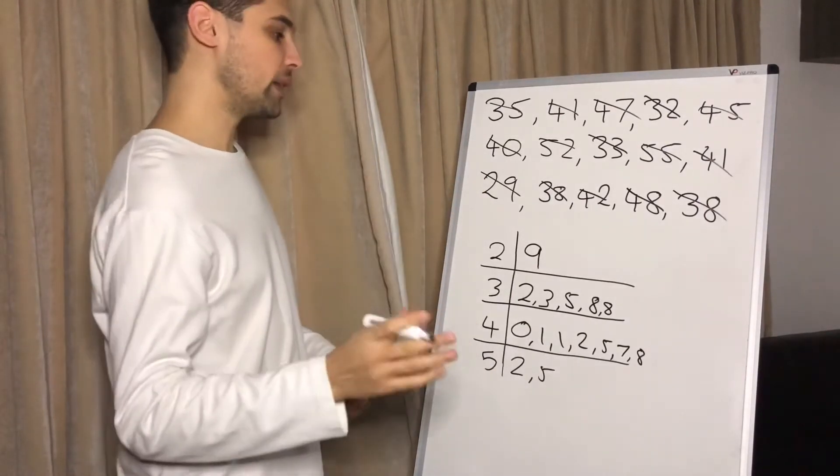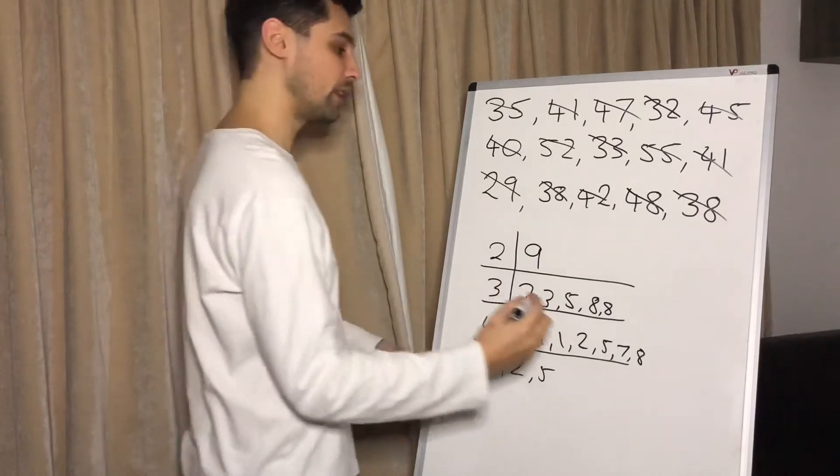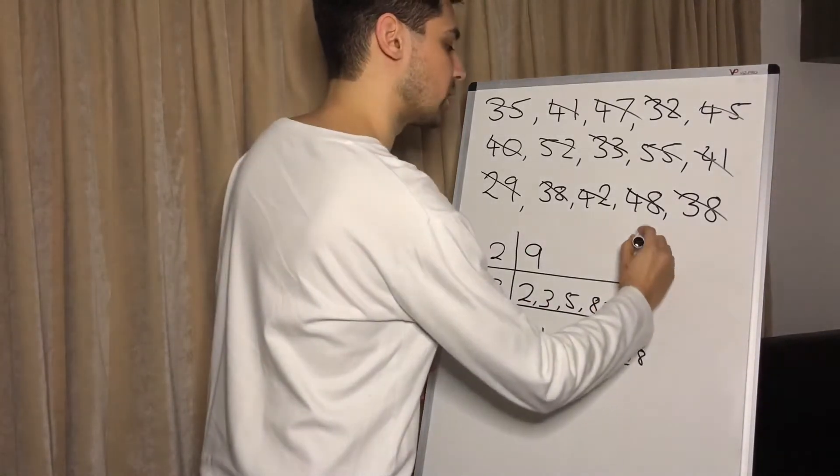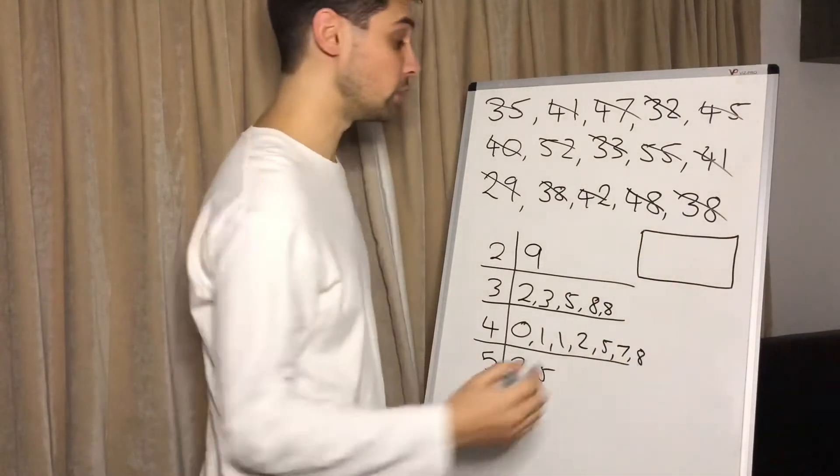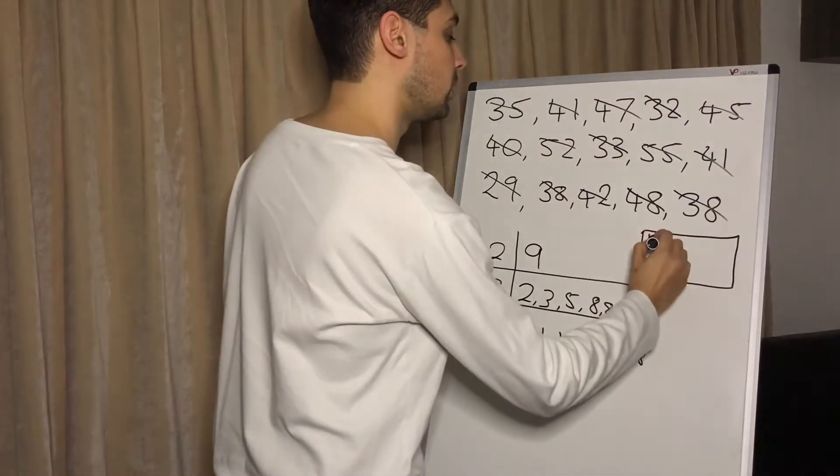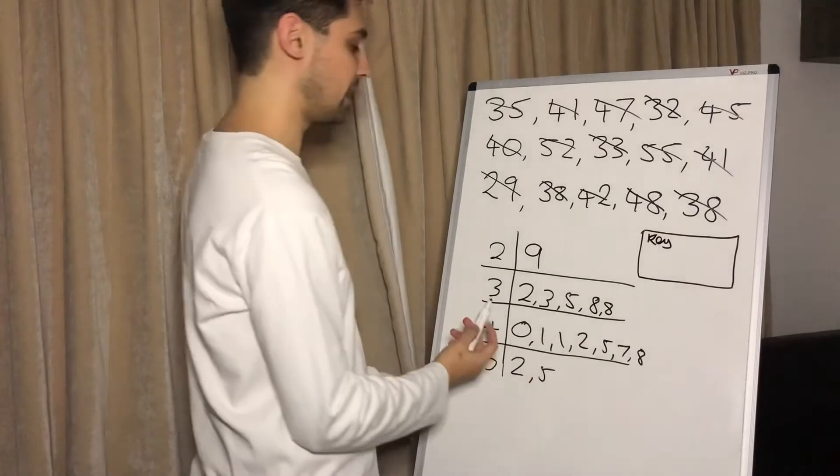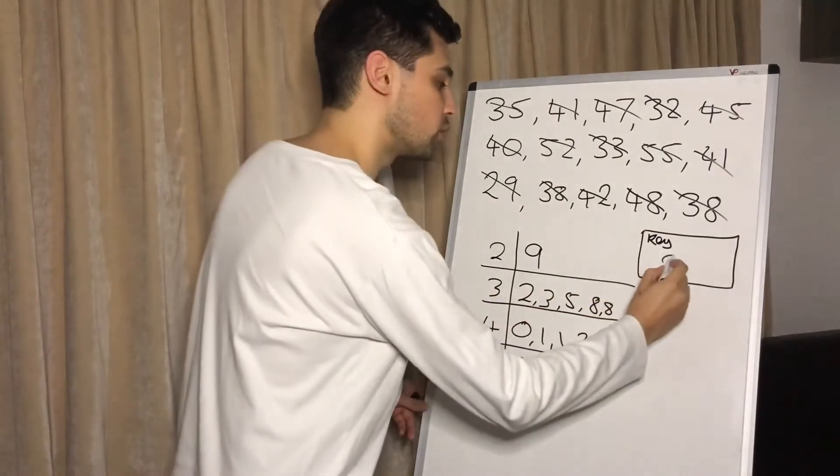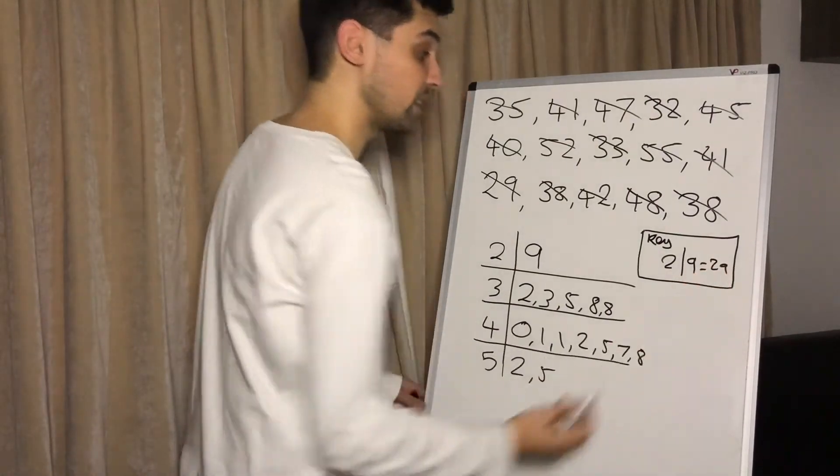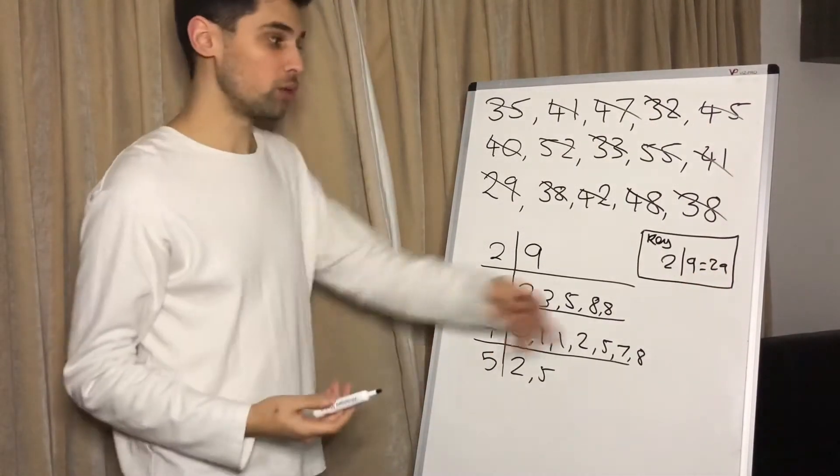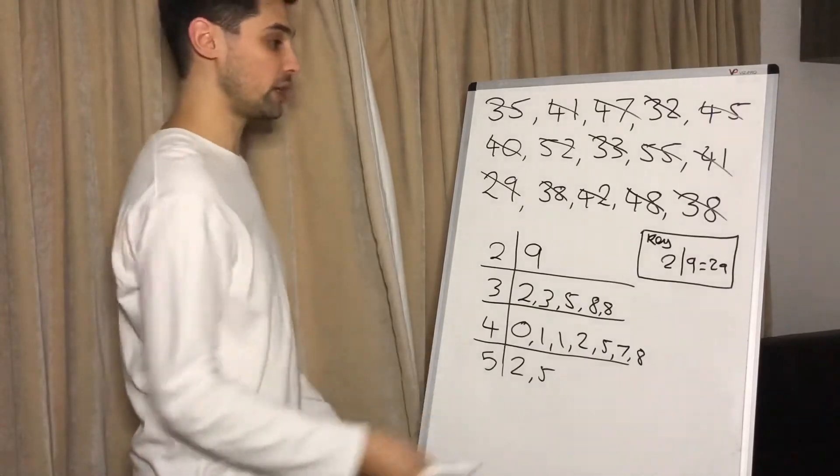One of the main things we need to do also is draw a key. So a key is just a little bit at the side where it tells us, often in a box, and this is worth a mark so you have to do it. So we do a little key there and it tells us what these numbers represent. We can write 2 line 9 equals 29. Because in some cases it might be 2.9. So that key is essential to tell us what these numbers actually are.